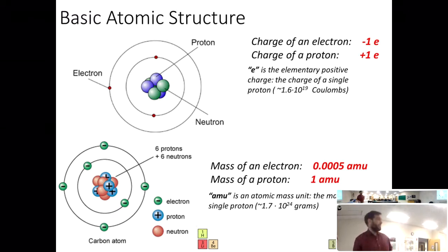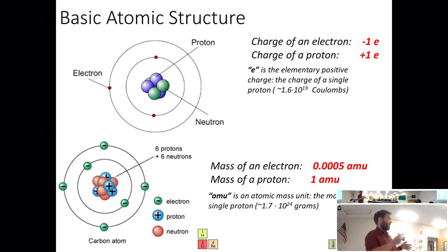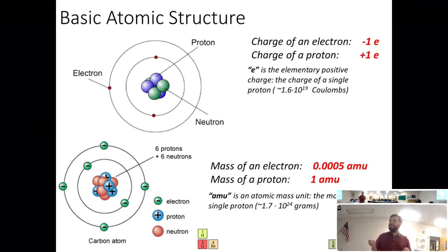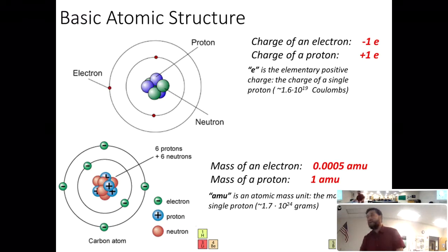Three basic subatomic particles are: electrons, neutrons, and protons. The charge on electrons is negative, protons are positive, and neutrons are neutral. The protons and neutrons are in the nucleus. The electrons orbit around the nucleus.